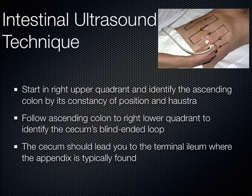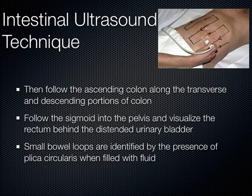You follow the ascending colon down to the right lower quadrant where the appendix would be — the cecum has a blind-ended loop, and the appendix pops right off the terminal ileum. From there, continue mowing the lawn back up the ascending colon, across the transverse colon, and down the descending colon all the way to the sigmoid and into the pelvis. Do this in both a transverse and sagittal plane.